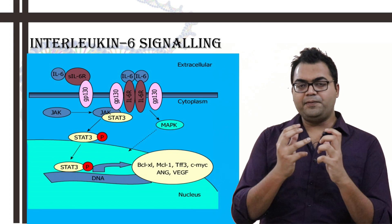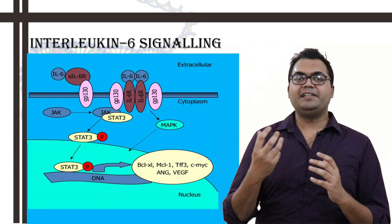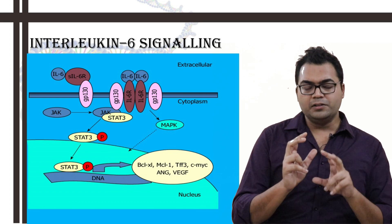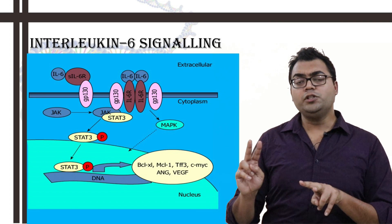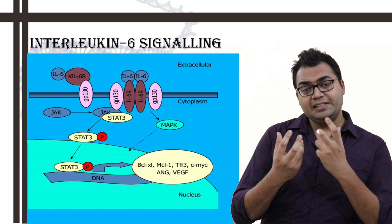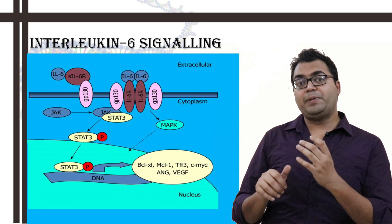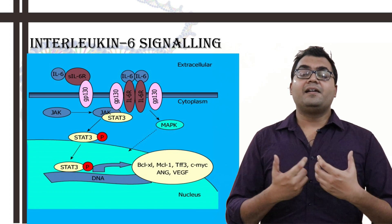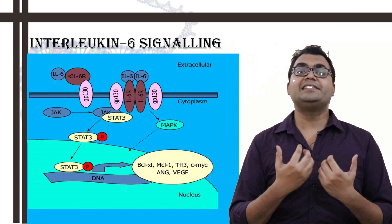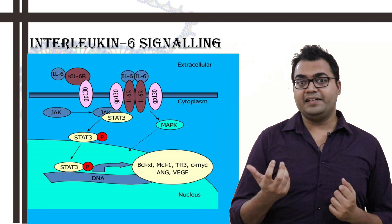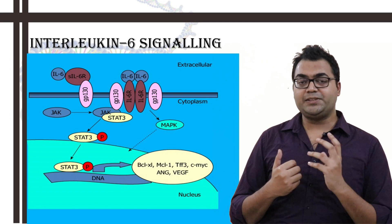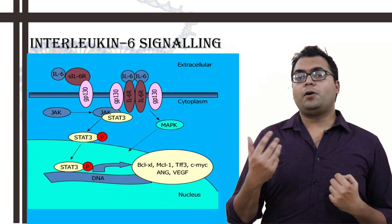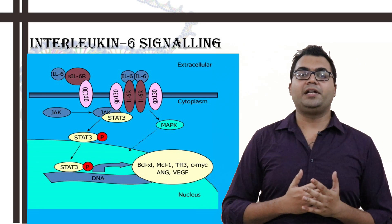After the binding of GP-130, dimerization of GP-130 takes place. The complex becomes two IL-6 molecules, two IL-6 main receptors, and two GP-130 units. After GP-130 becomes a dimer, since it is a signal-transducing molecule, it has a cytoplasmic intracellular domain which causes the commencement of various signaling cascades like the JAK pathway — Janus-associated kinases — and also the recruitment of STAT3, specifically STAT3 from the STAT family of proteins, that is the signal transducer and activator of transcription-3. It can also cause the activation of various pro-apoptotic proteins.